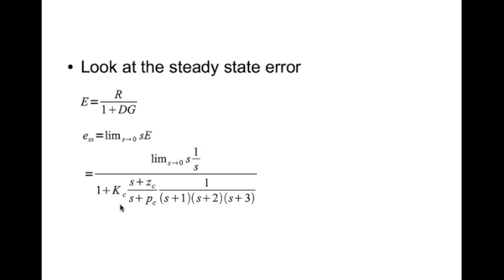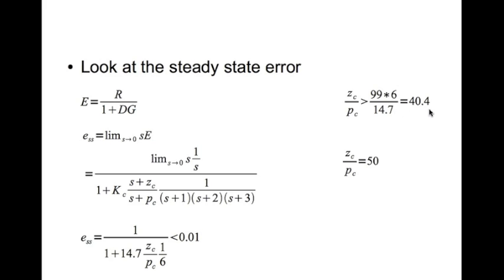This is your D here, this portion here, and this is your plant. And if you take the limit, you get ess is 1 divided by (1 + 14.7 times zc/pc times 1/6) is less than 0.01. Now that gives you zc/pc is greater than 40.4. I've arbitrarily chosen a number 50, zc/pc equal to 50.